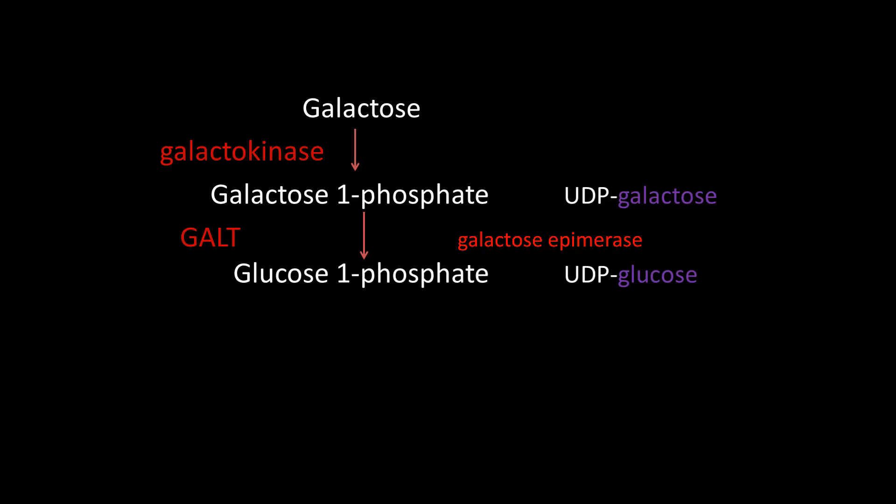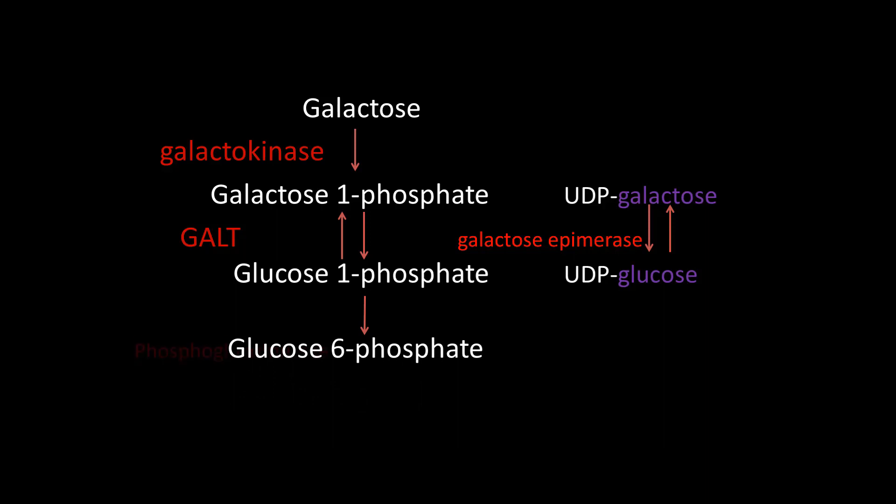At the same time, there is a conversion of UDP-galactose (uridine diphosphate galactose) to UDP-glucose (uridine diphosphate glucose) by the enzyme galactose epimerase. Both of these reactions are reversible. Then glucose-1-phosphate is converted to glucose-6-phosphate, which enters glycolysis.